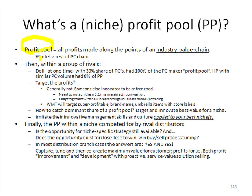In those days, the curiosity was why did the Wintel duopoly — Windows and Intel — make about 85-90% of all the profits in the entire personal computer industry supply chain, because they both had monopolies on what they did. Everybody else was sort of a commodity business.